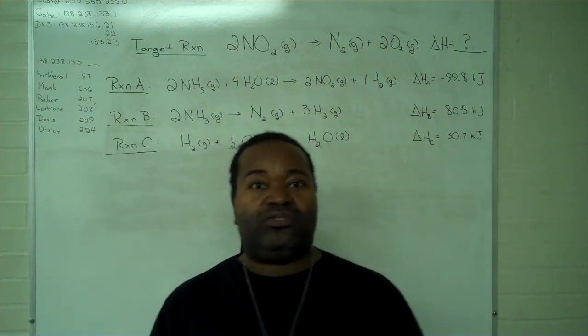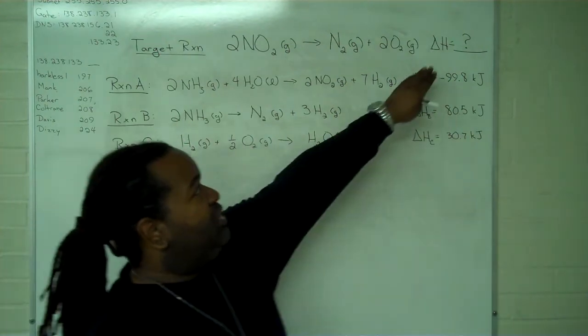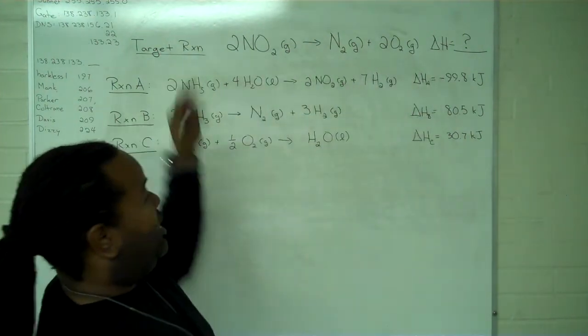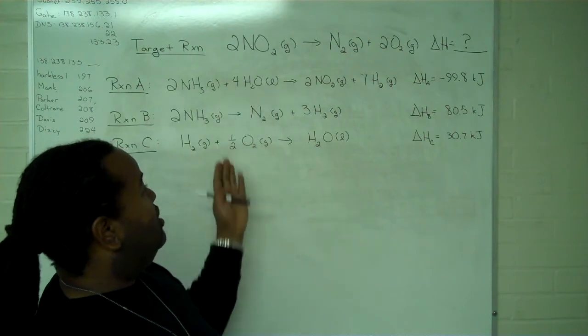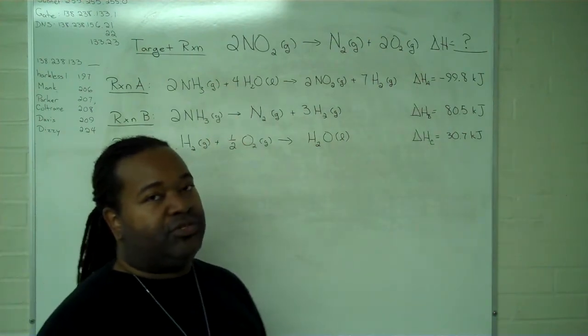This instructional video will demonstrate how to use Hess's law to determine a delta H value for a target reaction when you're given a set of working reactions where each of their delta H values are known.